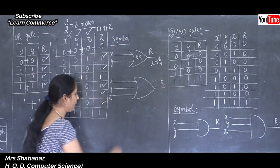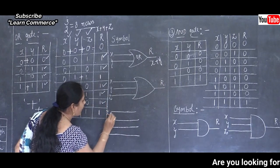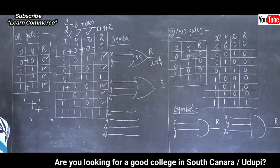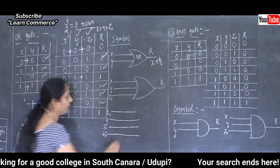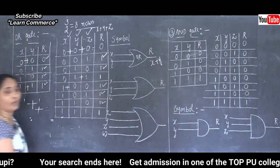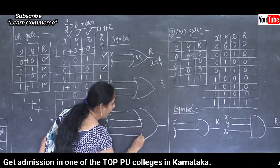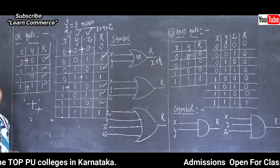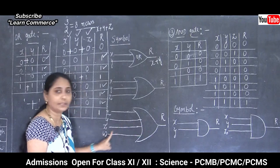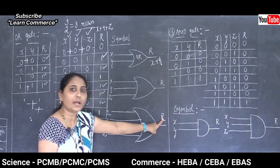For four variables, we draw four input lines on the OR gate symbol. Variables can be named X, Y, Z, W or A, B, C, D. We read it as X OR Y OR Z OR W = result, written as X+Y+Z+W.